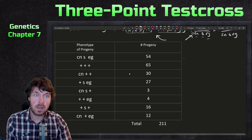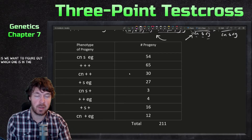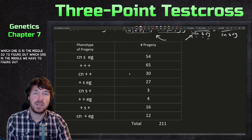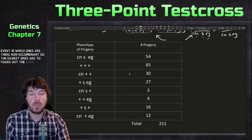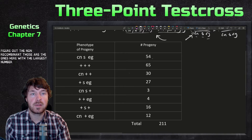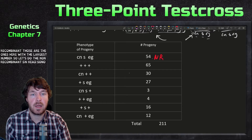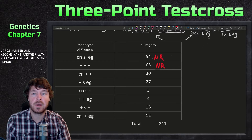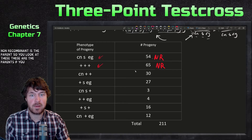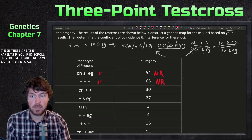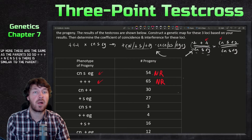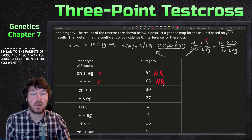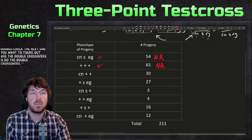Step one: figure out which gene is in the middle. To do that, we identify the non-recombinants, double crossovers, and single crossovers. The easiest to identify are the non-recombinants — those have the largest numbers. So 54 is a large number: non-recombinant. You can confirm these are the non-recombinants because they match the parental types: plus plus plus and cn s eg.